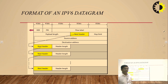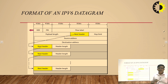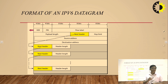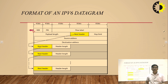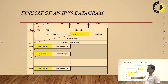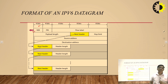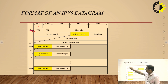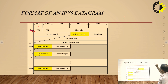This is the IPv6 header format, which is quite different from the IPv4 datagram format. In the first field — version — it is the same as the IPv4 header and is 4 bits long. The 4-bit version field shows whether this is an IPv4 or IPv6 header. In IPv4 the value is 4, and in IPv6 the value is 6.